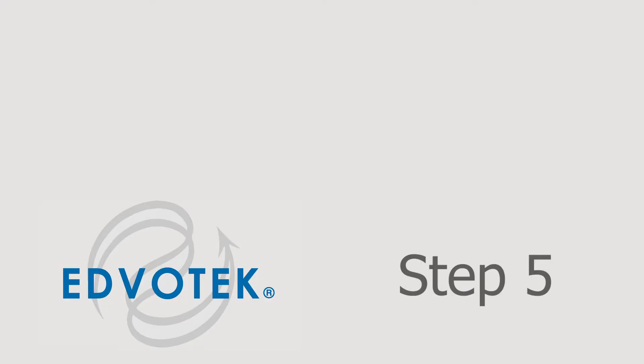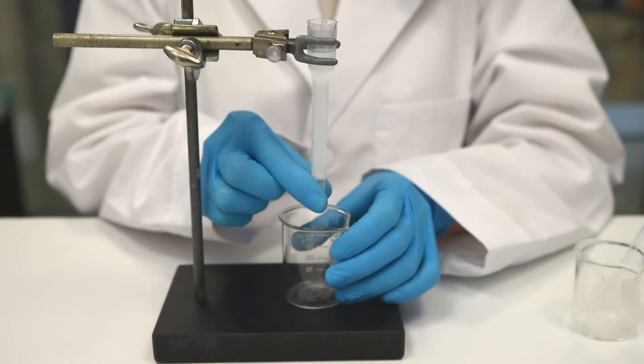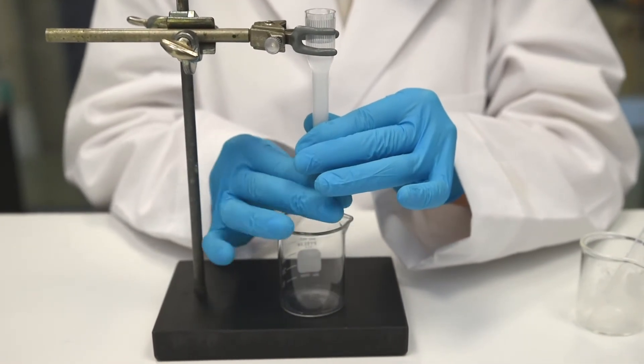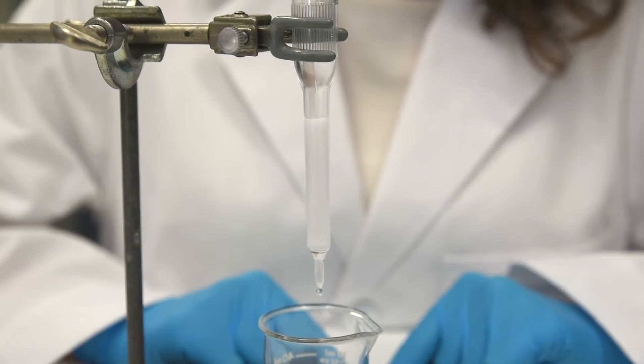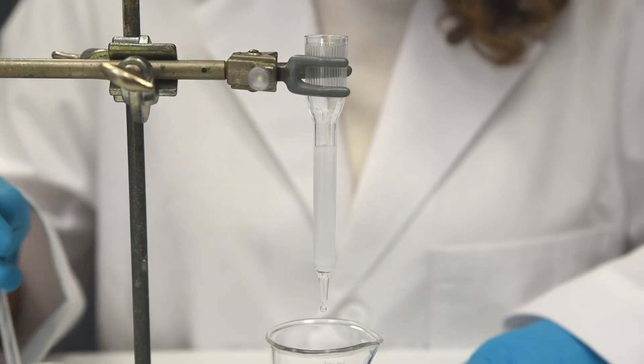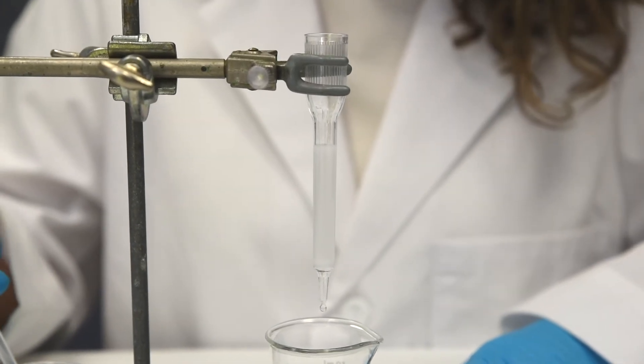Step 5: Place an empty beaker underneath the column to collect waste. Remove the cap from the bottom of the column and allow the matrix to pack into the column. The matrix should fill approximately two-thirds of the narrow part of the column.